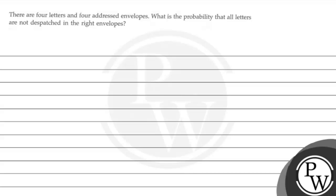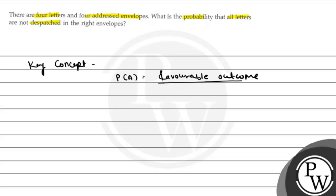Let's see the question. There are four letters and four addressed envelopes. What is the probability that all letters are not dispatched in the right envelopes? This belongs to probability. The key concept for this question is: probability of an event A is equal to favorable outcomes divided by total outcomes.